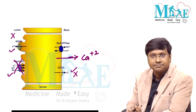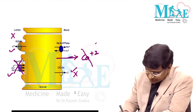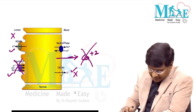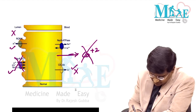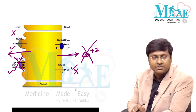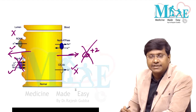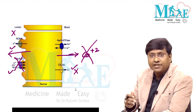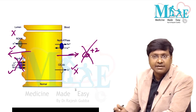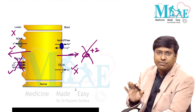An important point: only when all three channels work together is a gradient created, and that gradient causes reabsorption of calcium into the interstitium. If these channels are defective, calcium is not reabsorbed, remains in the lumen of the nephron, and gets excreted in the urine, resulting in nephrocalcinosis.